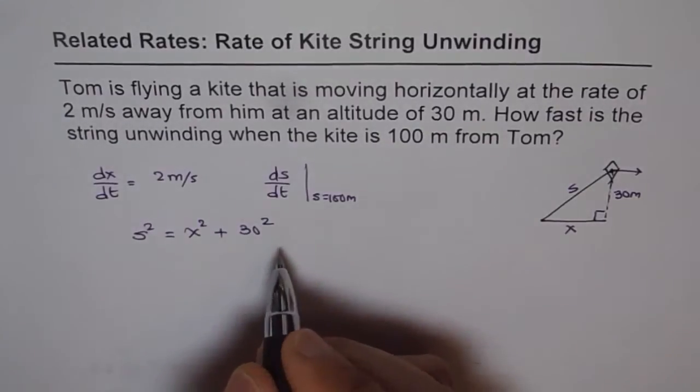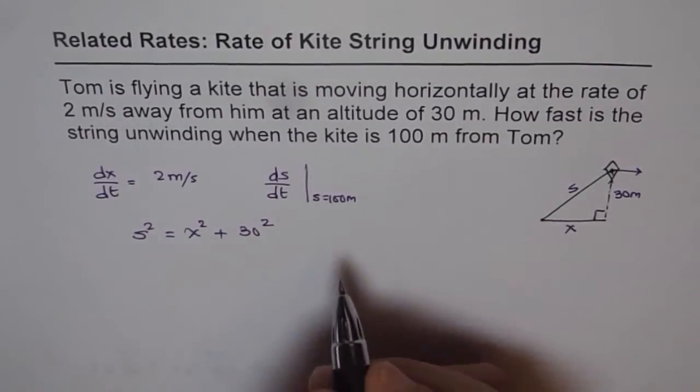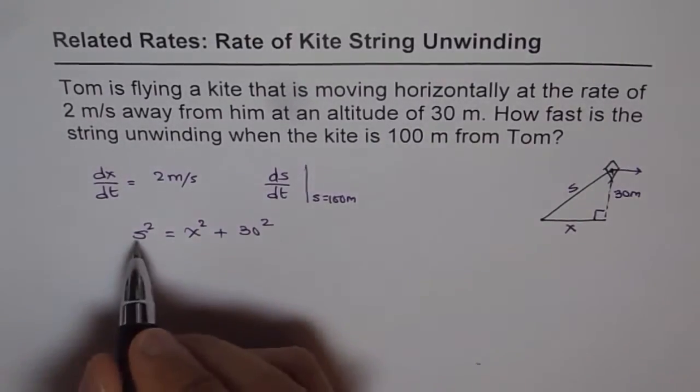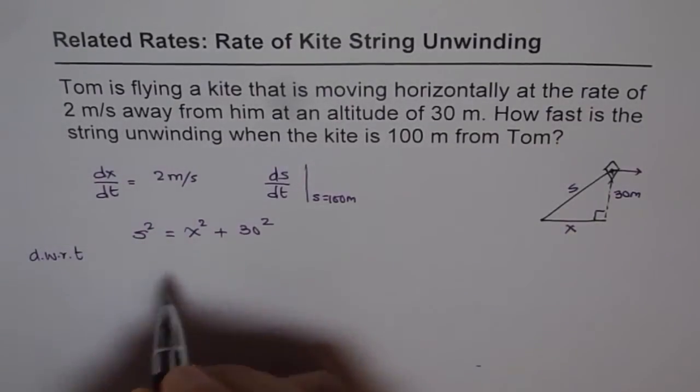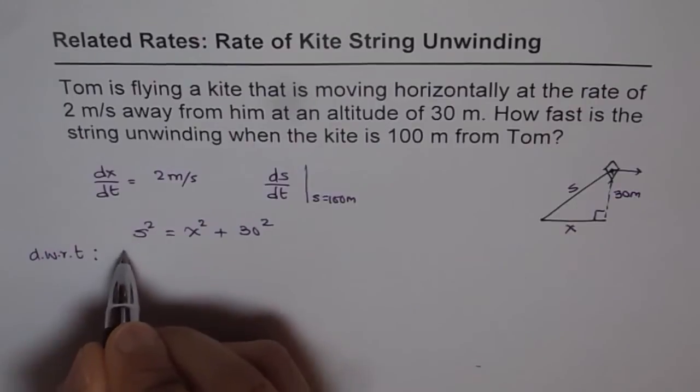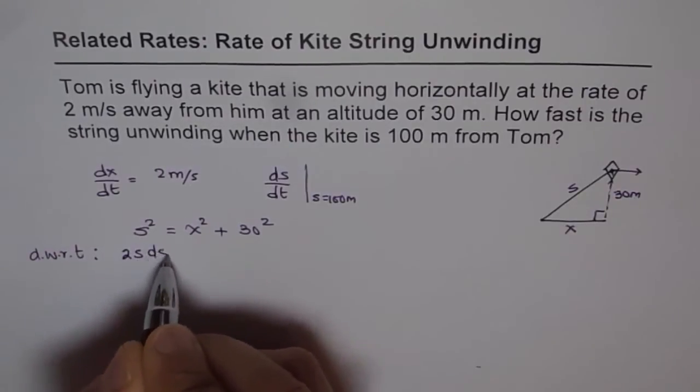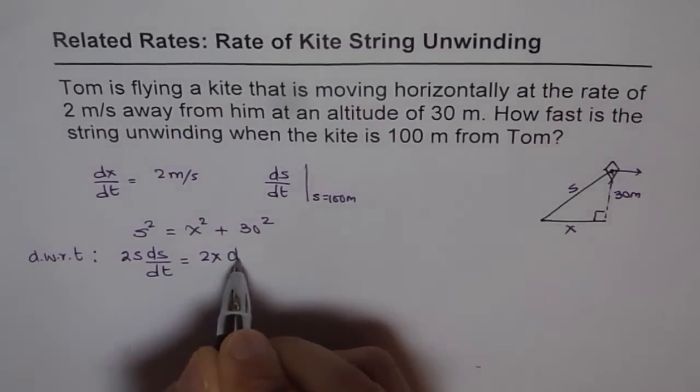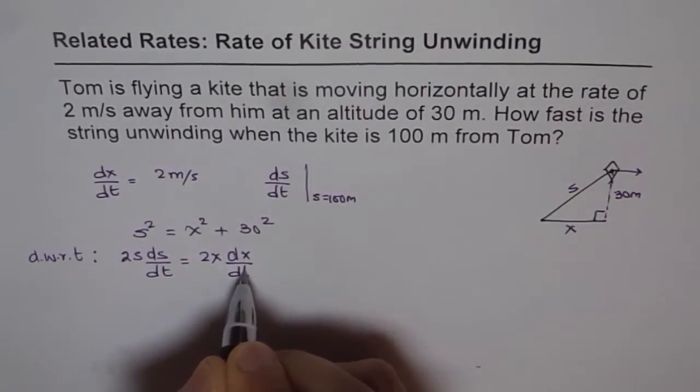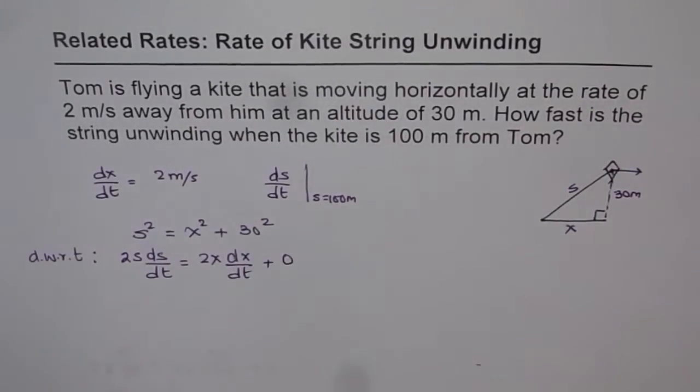We can take derivative with respect to time on both sides. So if you differentiate both sides with respect to time, what do you get? You get 2s(ds/dt) = 2x(dx/dt), and derivative of this is 0.